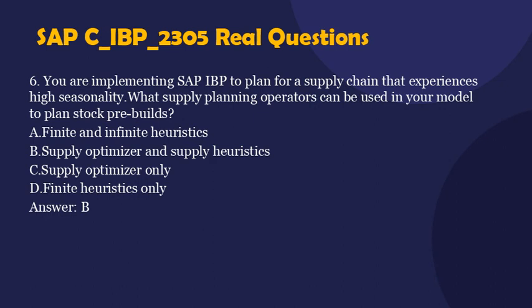Question 6. You are implementing SAP IBP to plan for a supply chain that experiences high seasonality. What supply planning operators can be used in your model to plan stock pre-builds? A. Finite and infinite heuristics. B. Supply optimizer and supply heuristics. C. Supply optimizer only. D. Finite heuristics only. Answer: B.